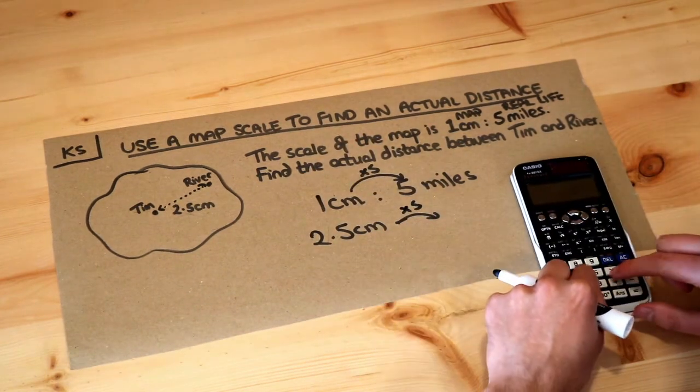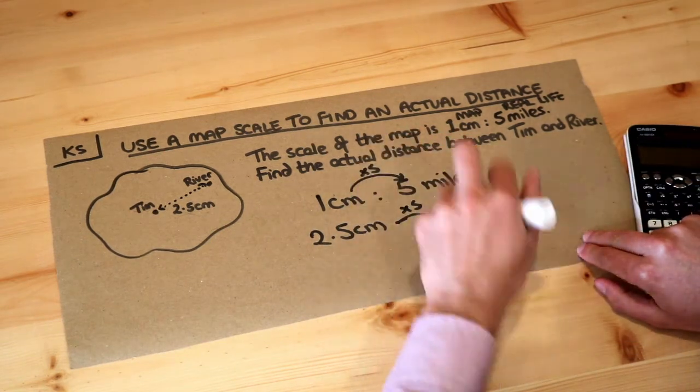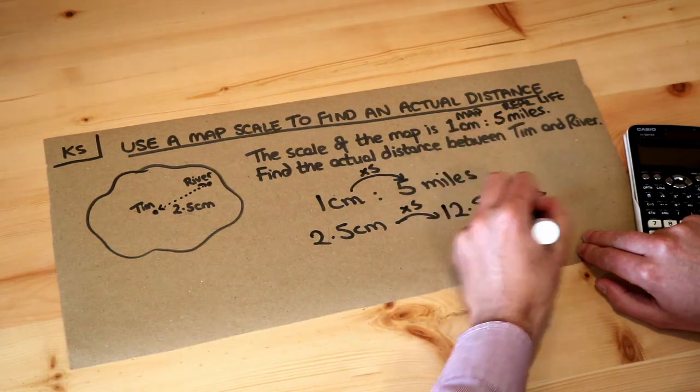So if we do 2.5 times 5 we get 12.5 and as I said the centimeters becomes miles and that's the final answer.